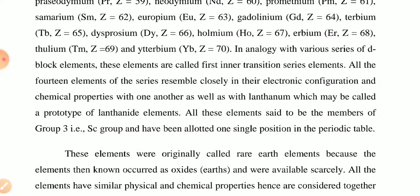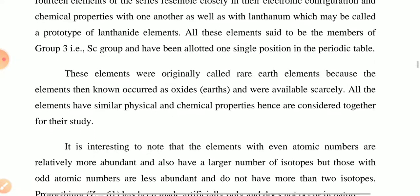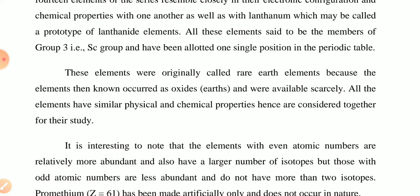All 14 elements of the series resemble each other closely in their electronic configurations and chemical properties, as well as lanthanum, which may be called the prototype of the lanthanide elements. All these elements are said to be members of group 3. These elements were originally called rare earth elements because the elements occurred as oxides in the earth.